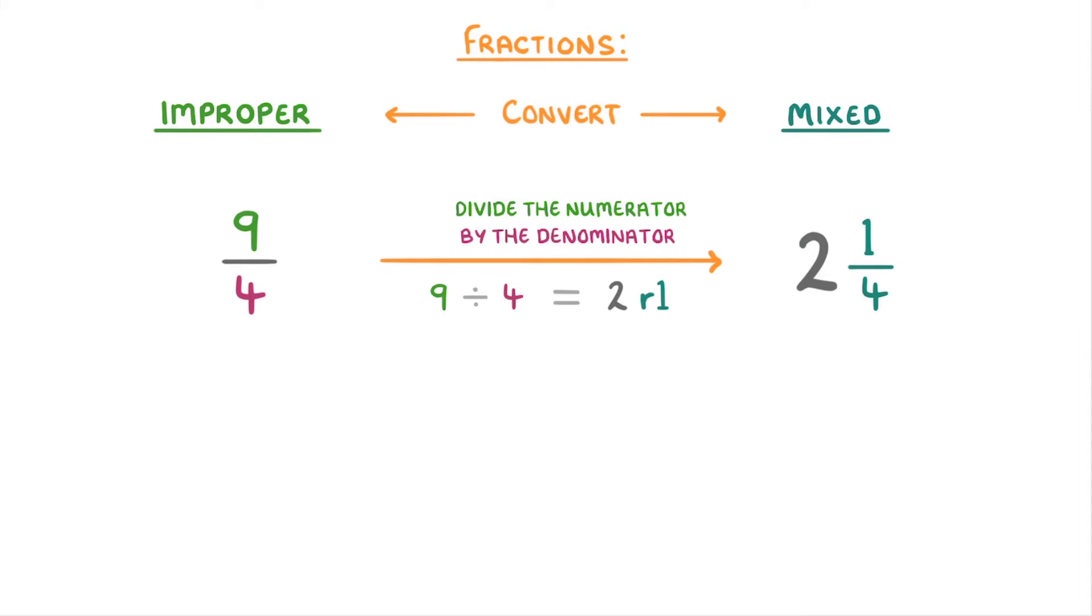Or if we wanted to convert 23/6, we'd just do 23 divided by 6, which is 3 remainder 5. So the mixed number form would be 3 and 5/6.